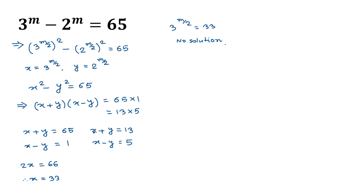For Case 2, adding x plus y equals 13 and x minus y equals 5: the y terms cancel, giving 2x equals 18, so x equals 9. Substituting, 3 to the power m over 2 equals 9, which equals 3 squared. Since the bases are the same, m over 2 equals 2.